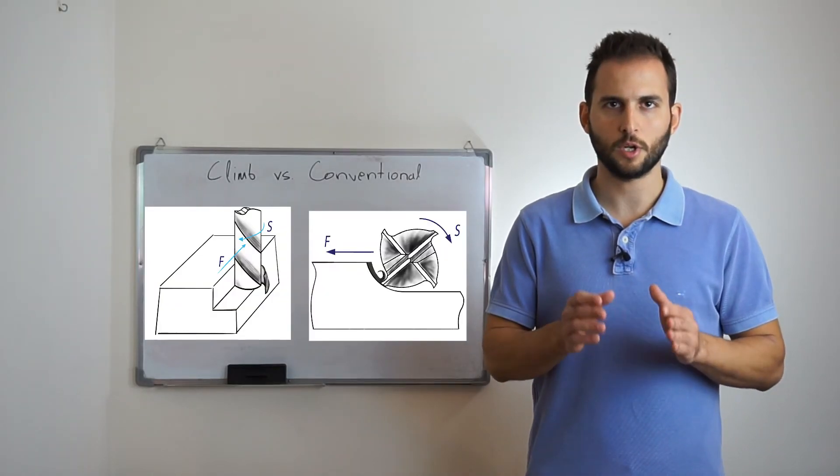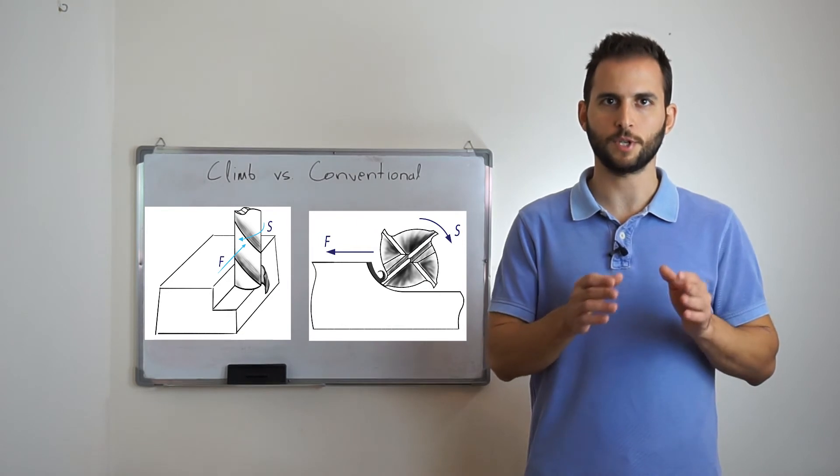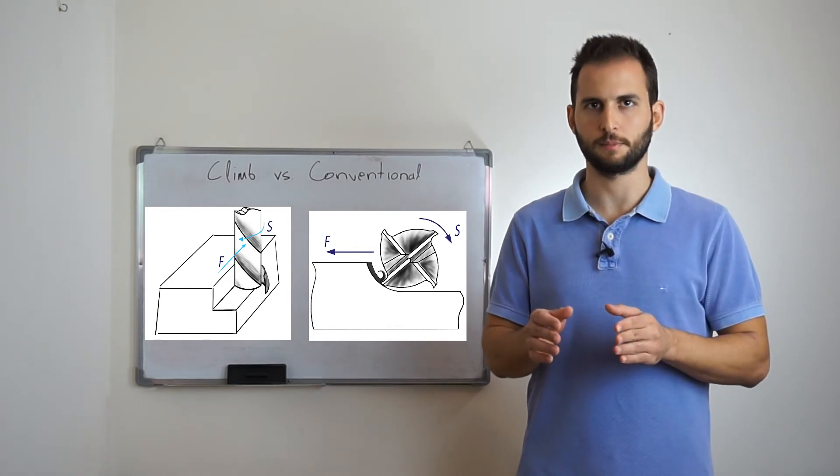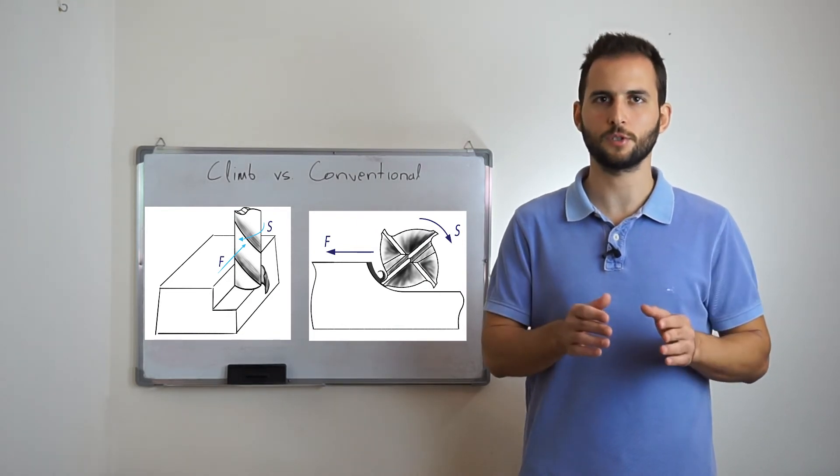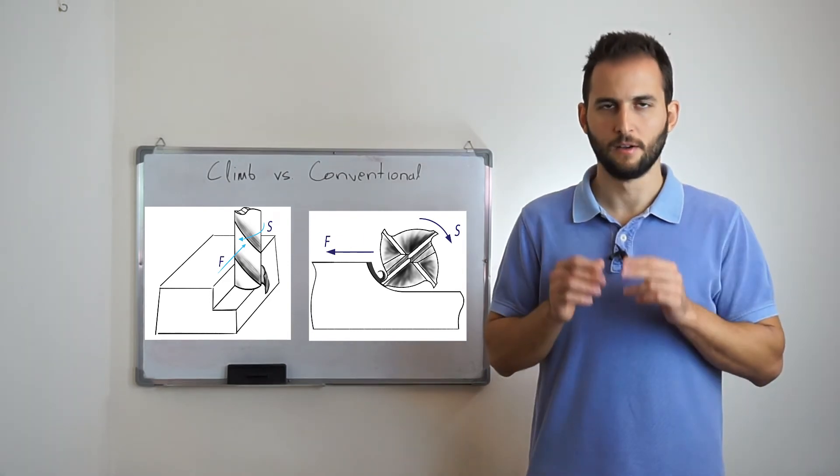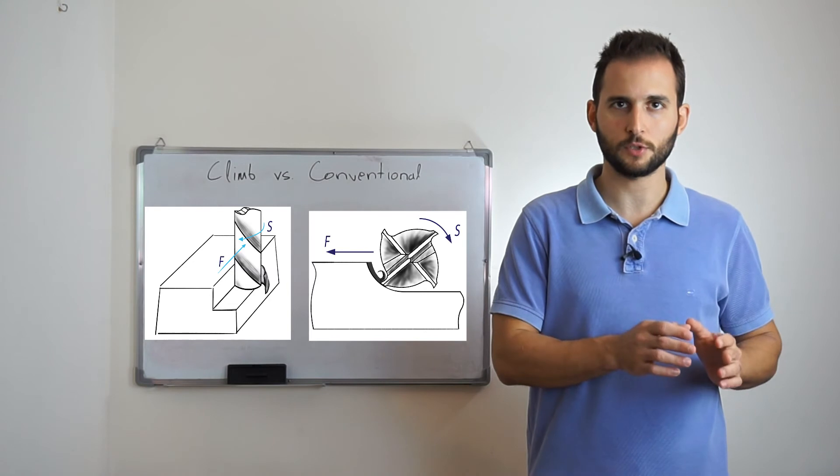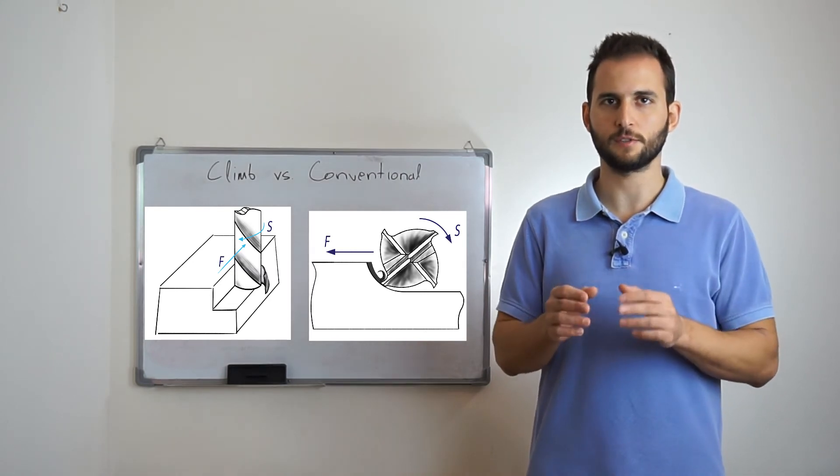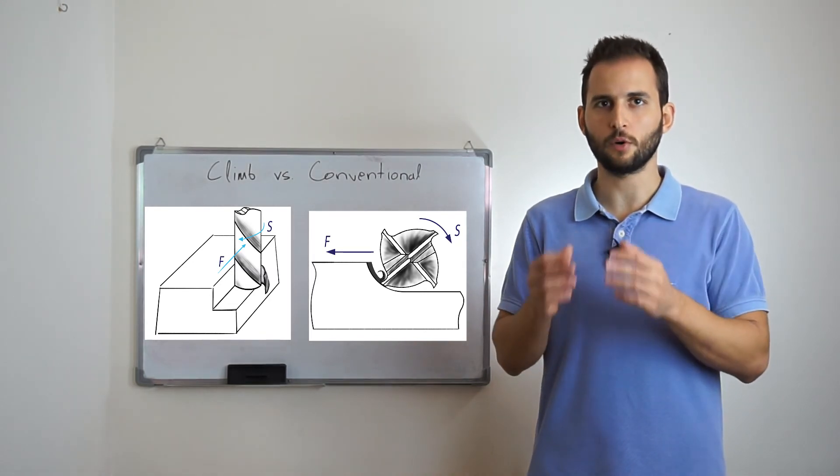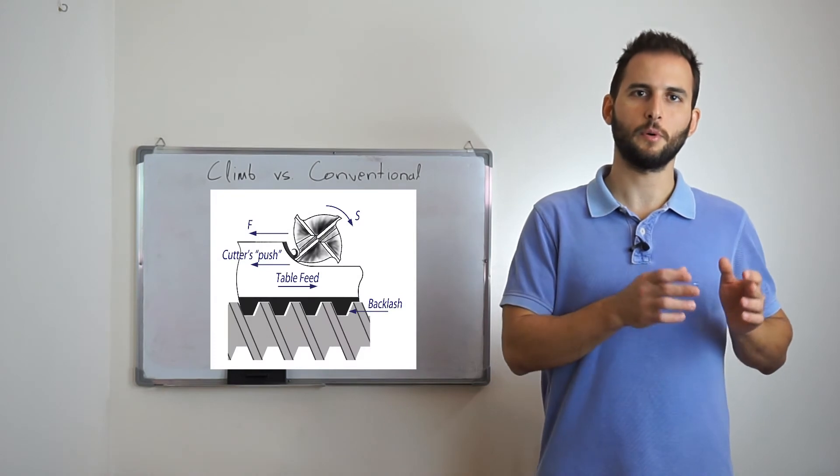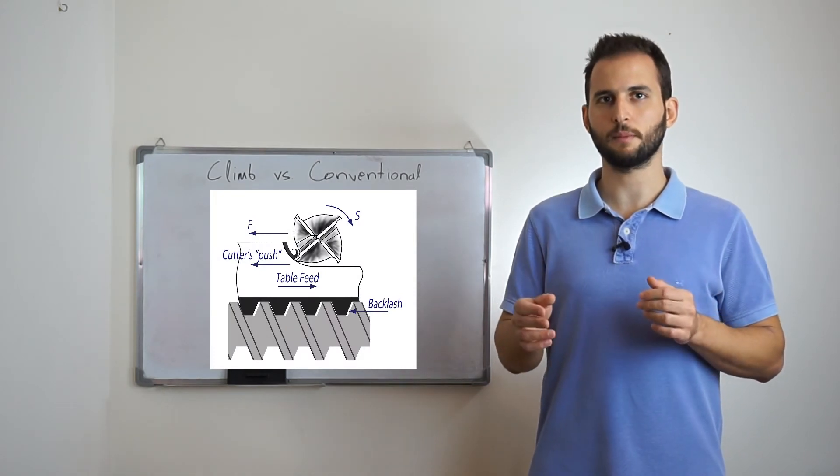Also, an additional case where conventional milling can be proven very useful is for milling of surface hardened parts, because in conventional milling the chip formation starts below the surface of the part. Finally, it has to be mentioned that despite the fact that conventional milling produces parts with poor surface quality due to less effective chip evacuation, sometimes it's our only option whenever we have to operate machine tools with significant backlash on their axis.